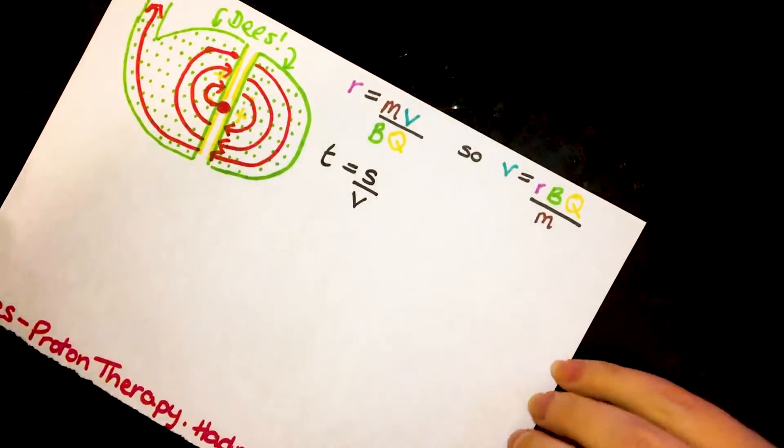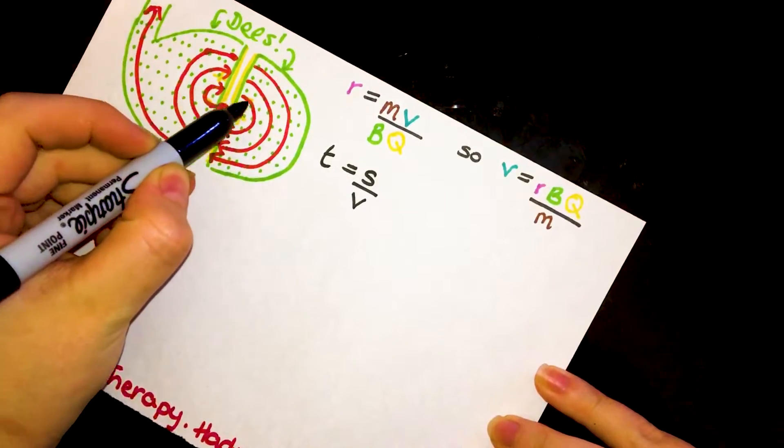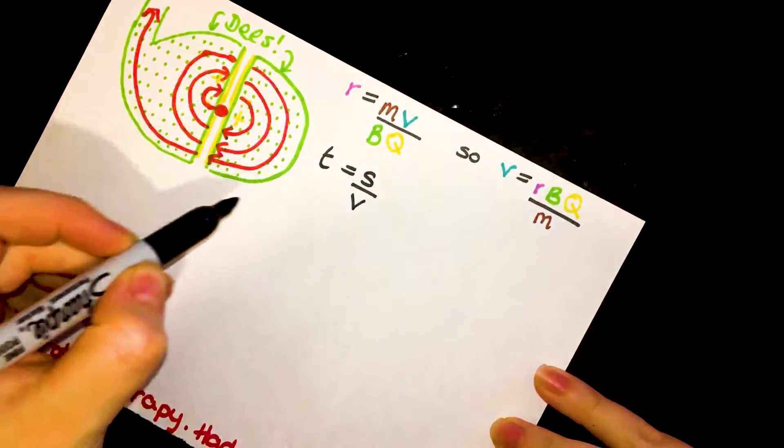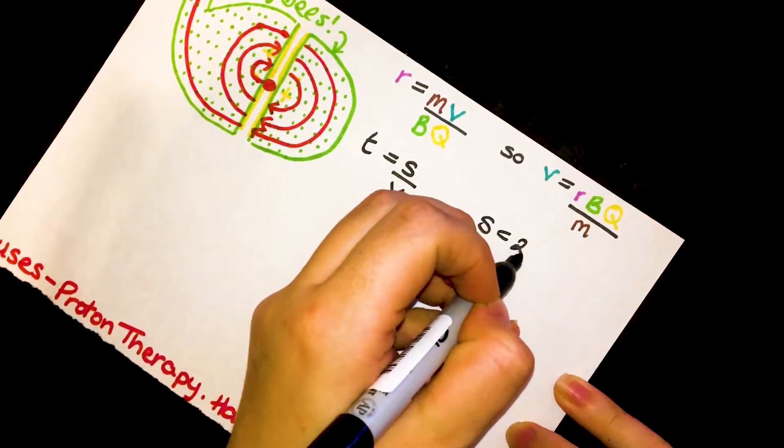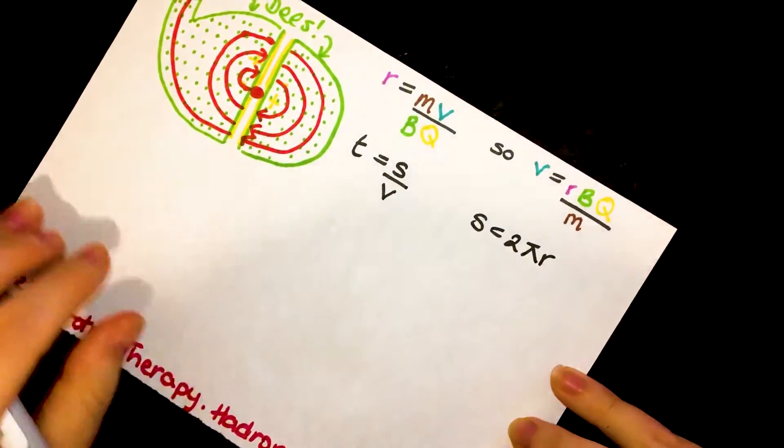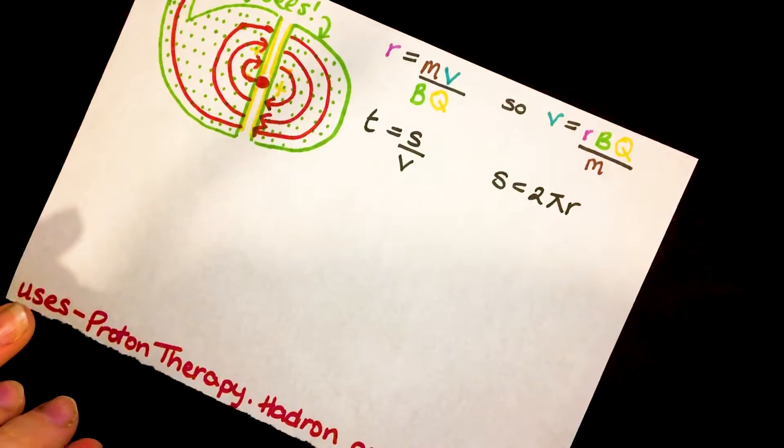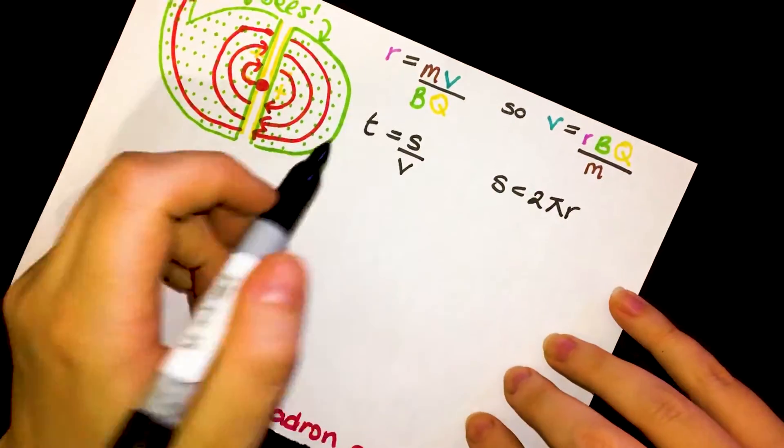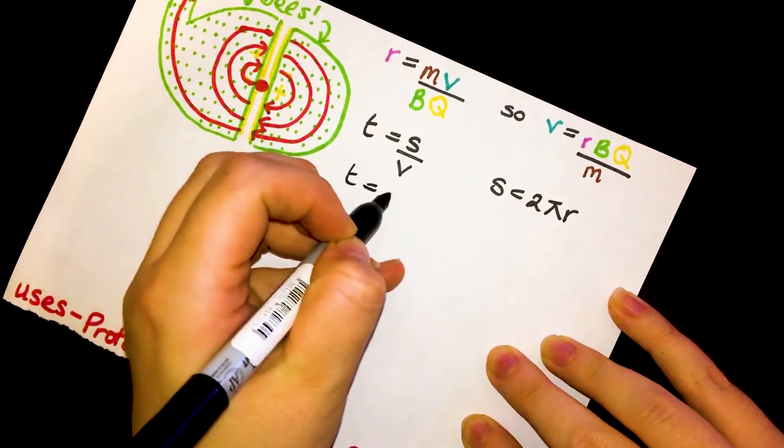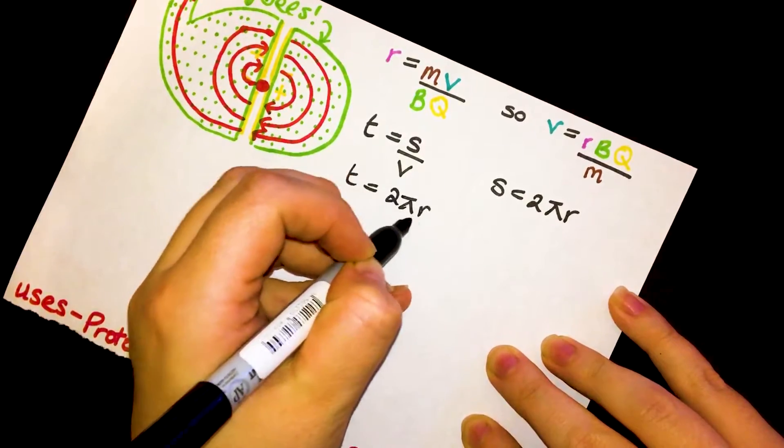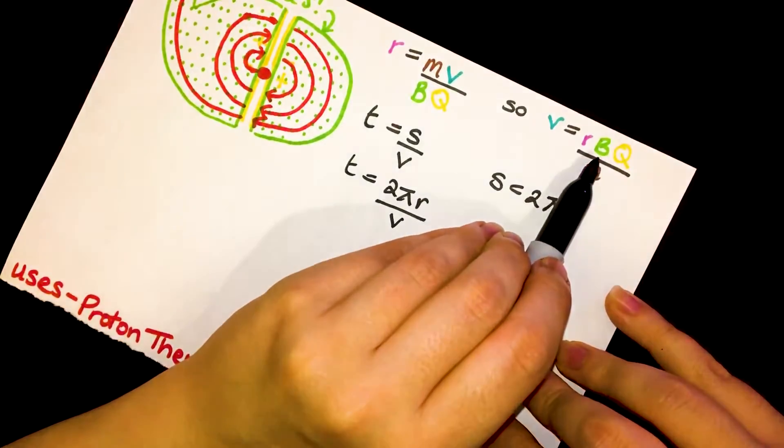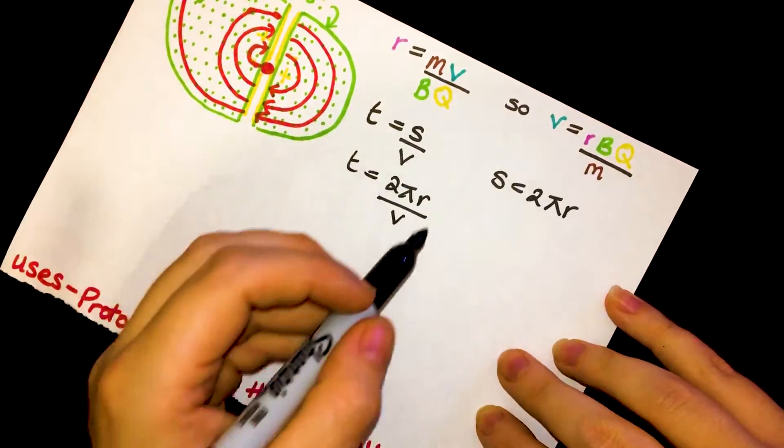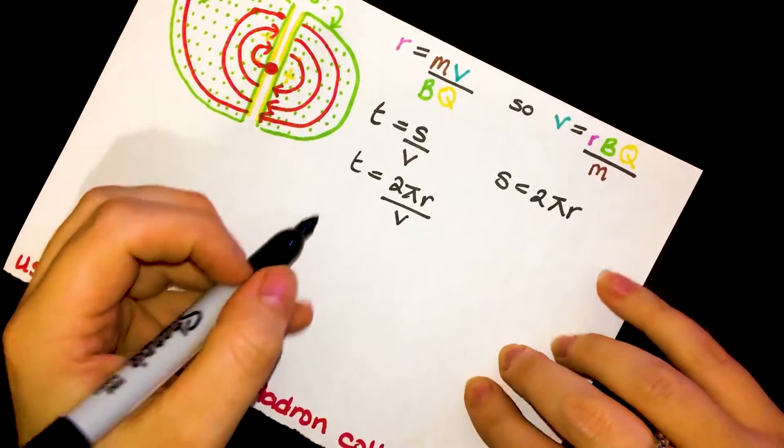But our distance is going to be the circumference of the circle that this proton is going round in, so our distance is 2 pi r. Now if we substitute this back in, T is 2 pi r over V. Therefore we already know what V is, we've said V is what this is up here. So if we substitute this V into this equation, what we get instead is T equals 2 pi r m over B q r.